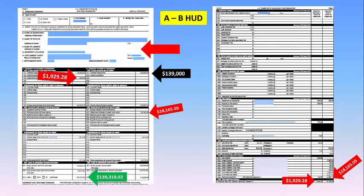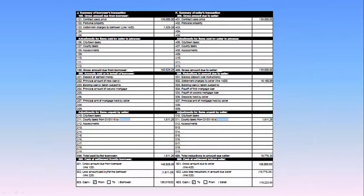This amount could be more or less than the purchase price depending on what the additional expenses or credits were. I've cut off the top half of the second page so you can see it in greater detail. That $139,318.02 was due. There's no earnest money deposit. I get this all the time — people say it's not a legal contract without an earnest money deposit. Well, here's another example where there's no earnest money deposit. This is the front side of the A to B HUD.